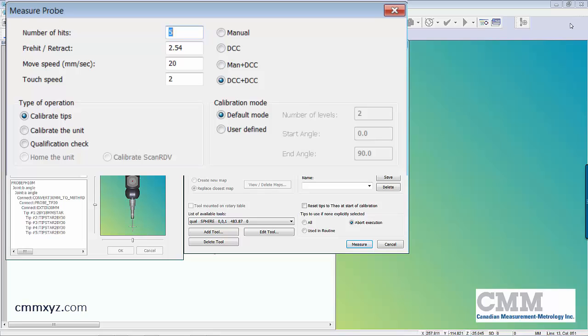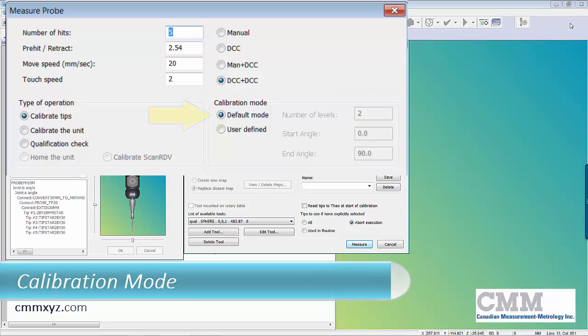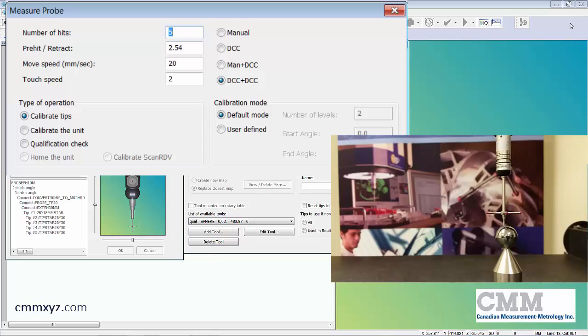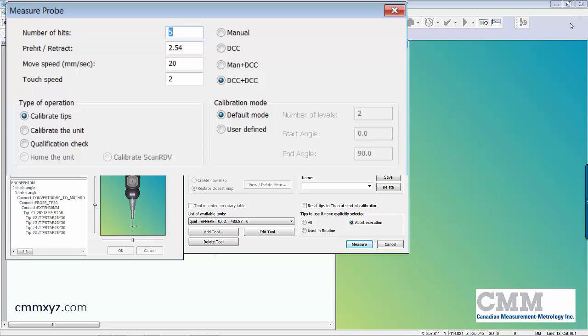The next setting we need to look at is the calibration mode. I have it set on default so the default mode will distribute my five hits around the equator and finishing on the North Pole. So my five hits will be four around the equator and our final hit on the top at the North Pole. That works well for this build and we'll just stick with that. When I run the calibration you'll see how that is implemented.